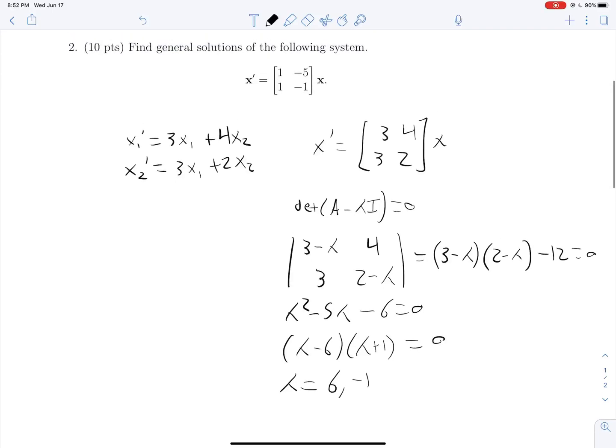So now we need some eigenvectors. And we can get that by plugging in lambda equals either 6 or negative 1 to a minus lambda i and solving that. So plugging in lambda is equal to 6. What do we get? We get negative 3, 4, 3, negative 2. Wait, that's negative 4 there.